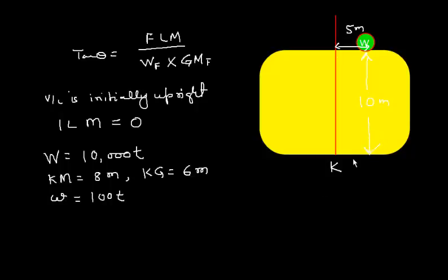This weight has to be discharged. At the moment, she is upright. This is your port side, this is the starboard side. We discharge some weight from starboard. What is the list? What is the list moment caused?